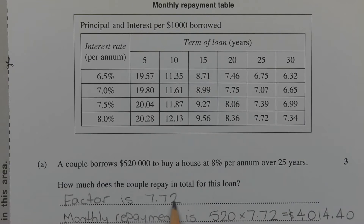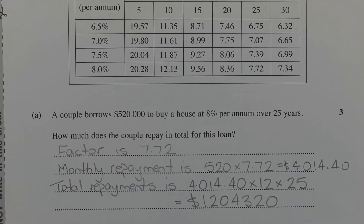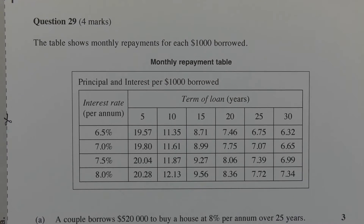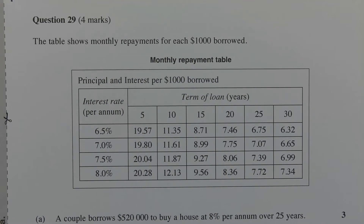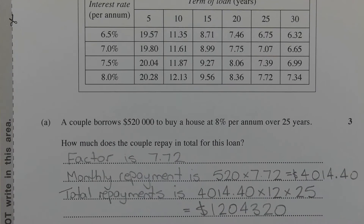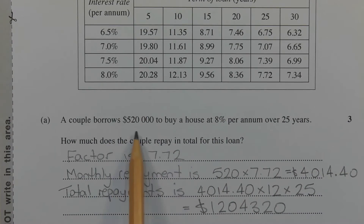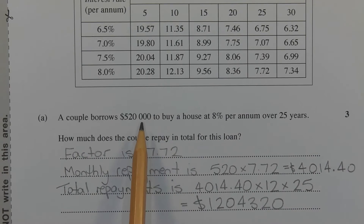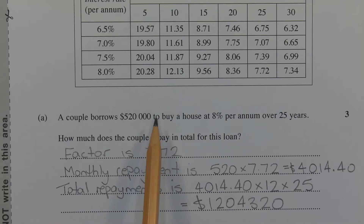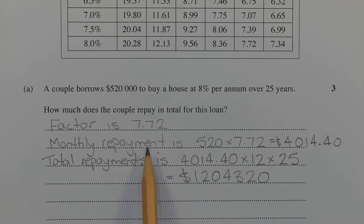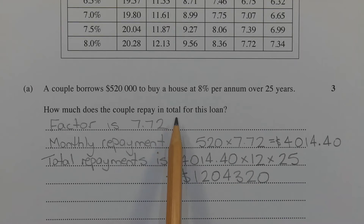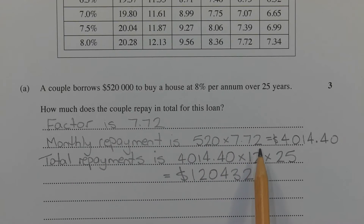So 7.72 is the factor. The next step is to determine the monthly repayment. The table shows monthly repayments for each $1,000 borrowed, so the question is how many lots of $1,000 are in $520,000. If we scratch out the three zeros, we have 520 lots of $1,000. So the monthly repayment is 520 times 7.72, which equals $4,014.40.